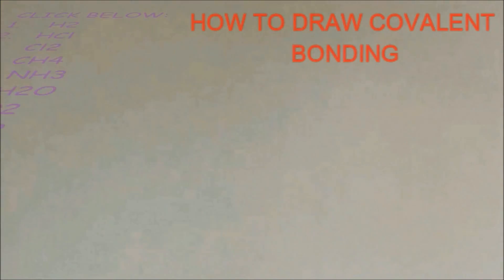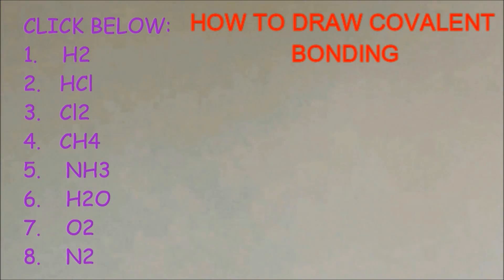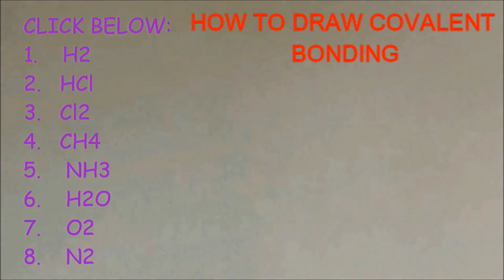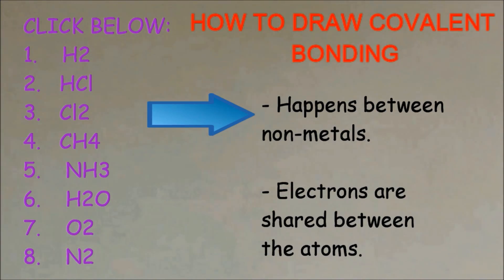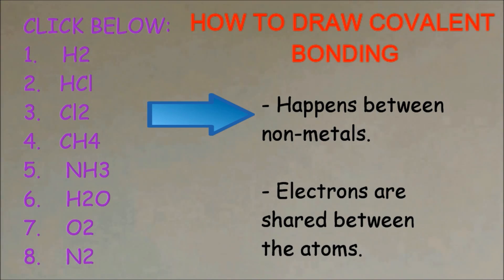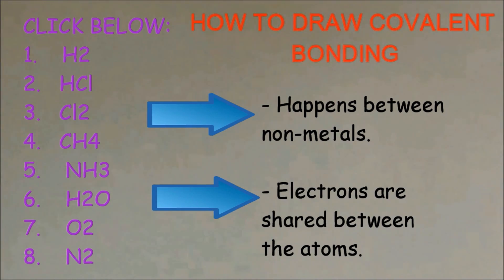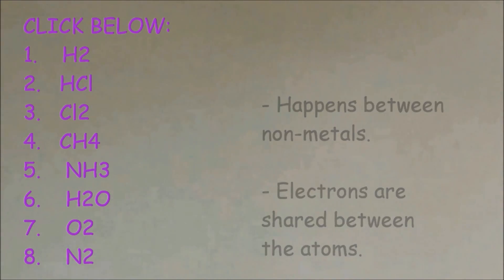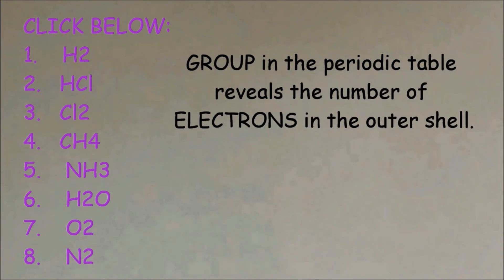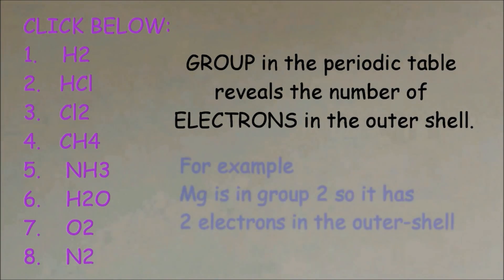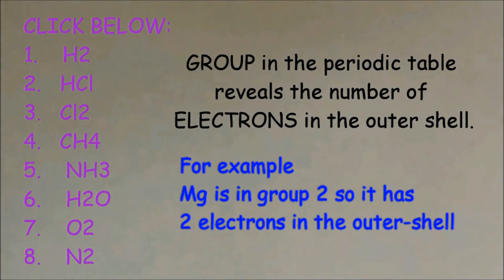Hi everyone, welcome to Science Tutorial for You. In this video I'm going to show you how to draw covalent bonding. The molecules I'm going to draw are made up of nonmetals, so covalent bonding happens between nonmetals and nonmetals, and the electrons are shared between the nonmetals. To draw covalent bonding, you need to know the electrons in the outer shell, which you can find by looking at the group in the periodic table.